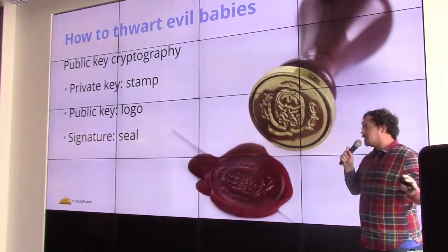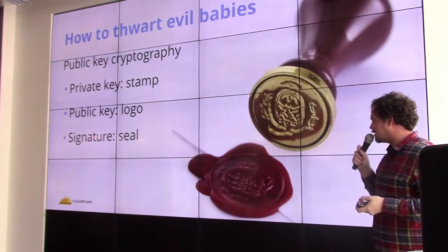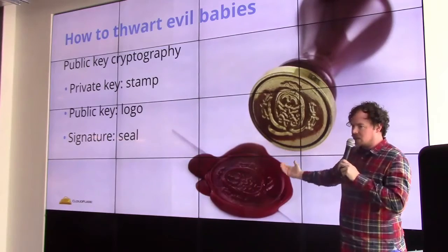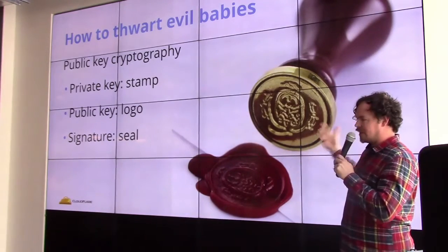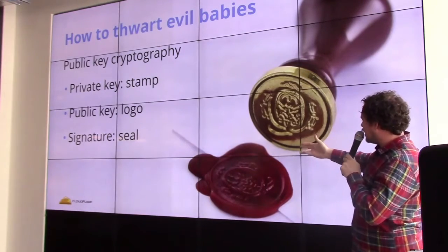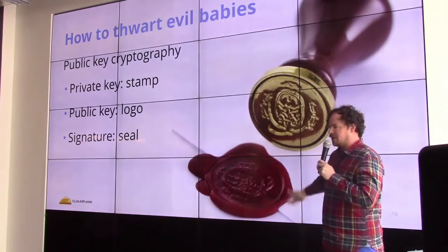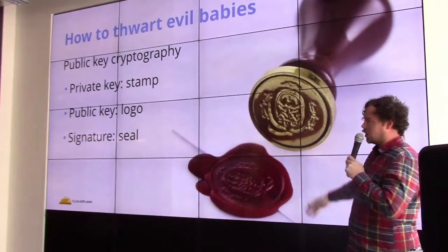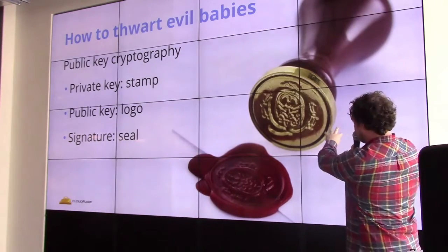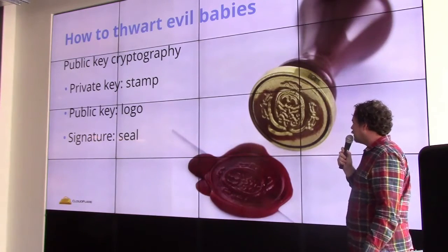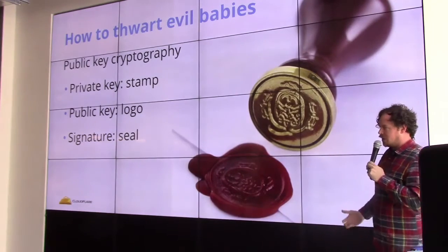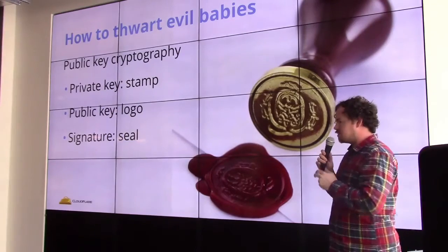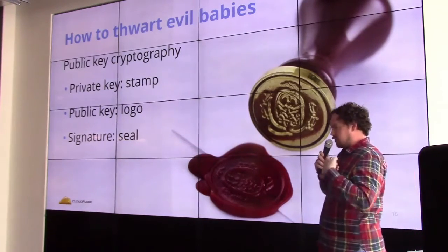The answer is public key cryptography — specifically digital signatures. You can kind of think of it as having three components: you have a private key, a public key, and with the private key you can create a signature. Conceptually, the private key is this stamp, and only you have it. You can create these seals with the stamp. And if someone wants to verify that you actually did seal this envelope with your stamp, they can just look at the logo. You can't reproduce this seal — it's mathematically strong. This idea that you can take a private piece of information and certify something as 'yes, this is actually me who's seen it and I approve of this' allows you to build up some pretty interesting constructions that allow you to trust the internet.